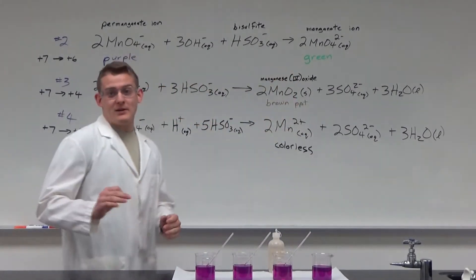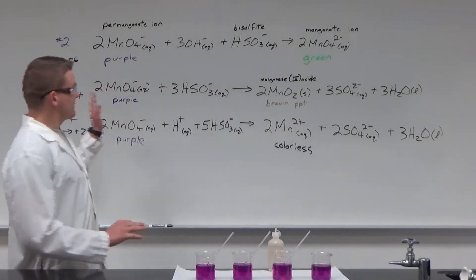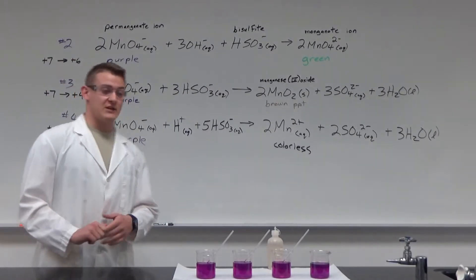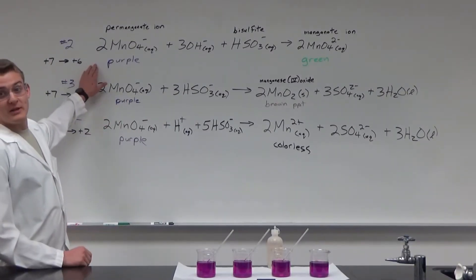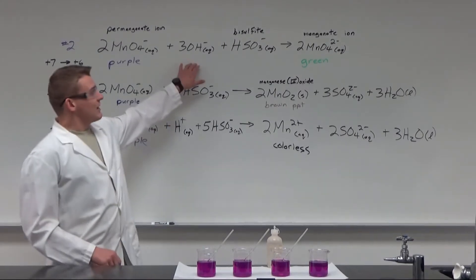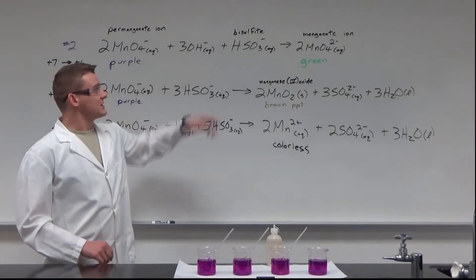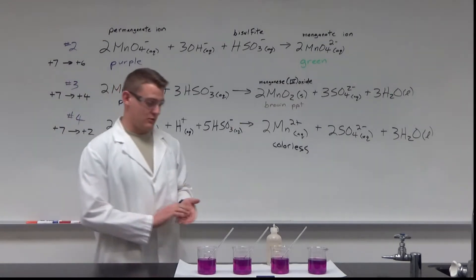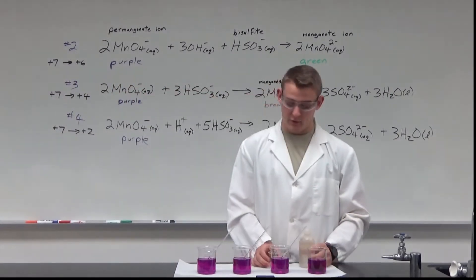As we manipulate the different oxidation states with the following reactions, we're going to see some color changes. The first reaction we're going to be doing is we're going to be putting some hydroxide solution and some bisulfite in the permanganate ion, and that should give us a green color. I'm going to go ahead and demonstrate that for you.